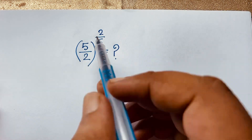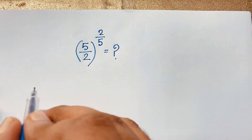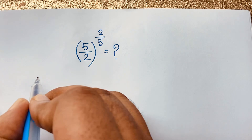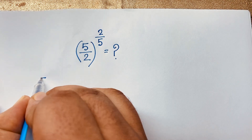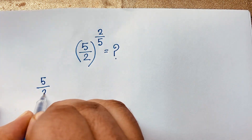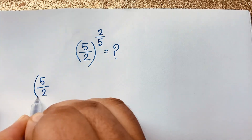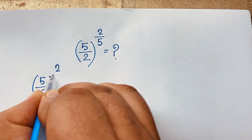So here we have 5 over 2 raised to the power of 2 over 5. I take our question and present our math solution. We have simplified this question: it is 5 over 2, and the exponent will be 2 over 5.